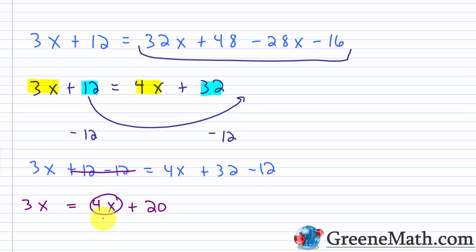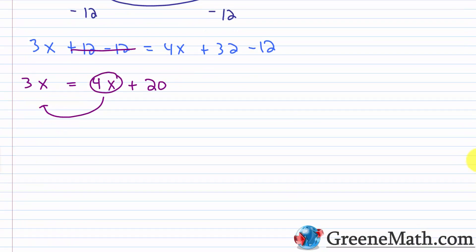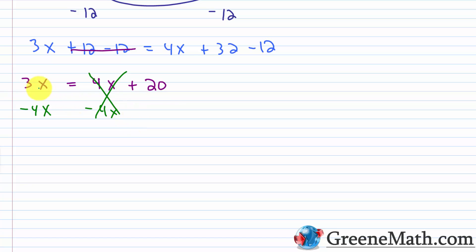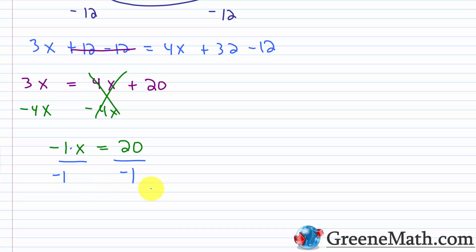Now I want to move the four x over to the left, so I subtract four x from each side. Four x minus four x is zero, and on the left, three x minus four x is negative x, or negative one x. This equals 20. For the third step, I isolate the variable by dividing both sides by negative one. So negative one over negative one is one, giving x is equal to 20 over negative one, which is negative 20. So our solution is x equals negative 20.